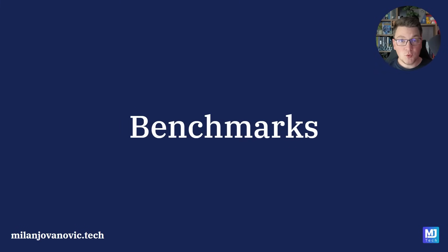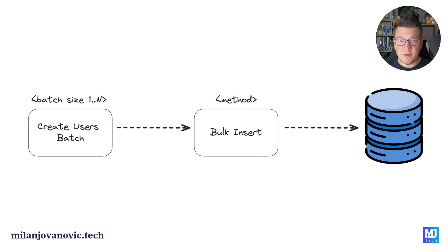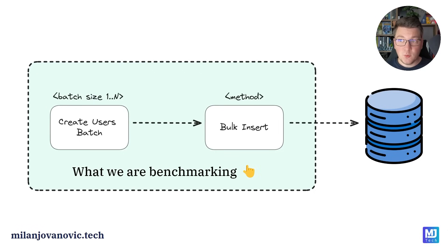In order to find out which approach is the fastest way to perform a bulk insert in .NET, we are going to write some benchmarks. All benchmarks will follow a simple flow: the first step is to create a batch of records to insert into the database, and the second step is the bulk insert operation itself. Generating the batch is also part of the benchmark, though it's only a small fraction compared to the network round-trip time.